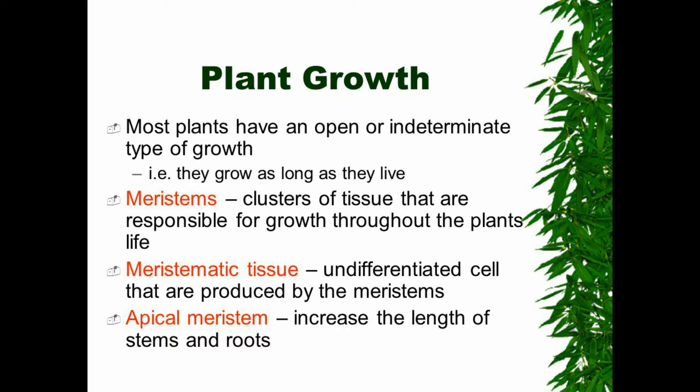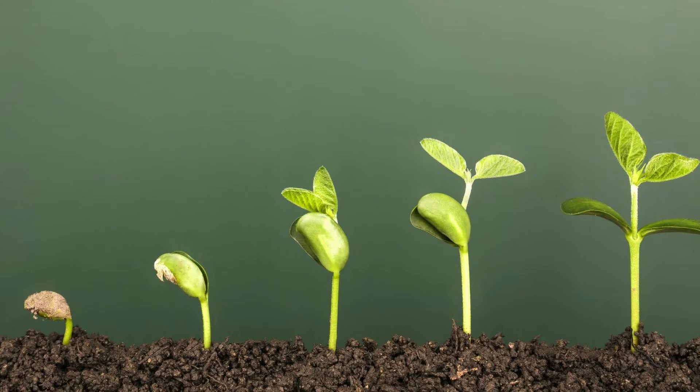Growth and Development in Plants. In plants, growth and development involve cell development, elongation, and differentiation of cells into tissues and then organs. Growth is an irreversible increase in size, and development is the programmed series of stages from the simpler to the complex form. As development proceeds, cellular differentiation of structures and functions takes place.